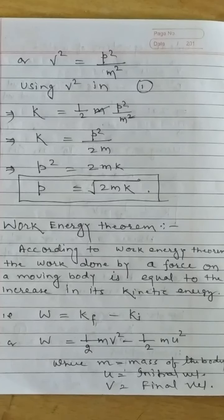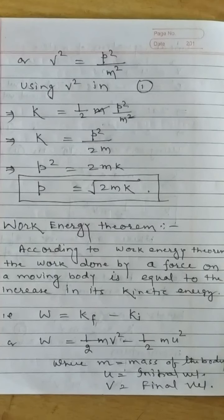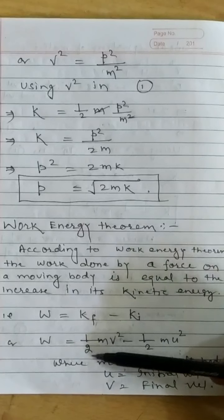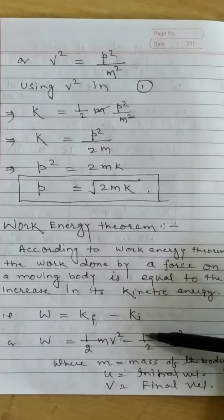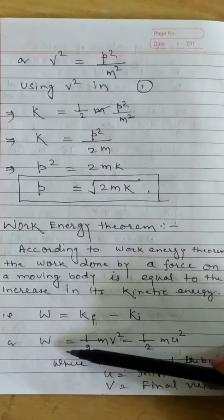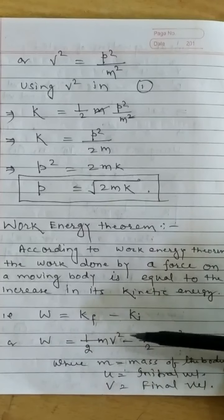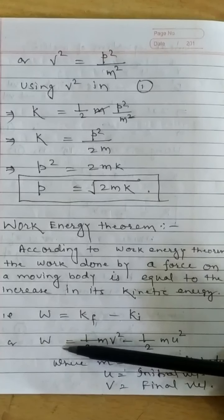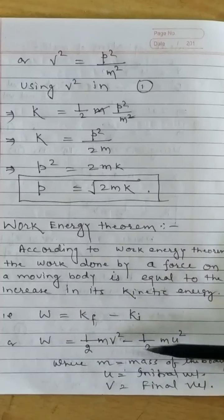Work-energy theorem: According to the work-energy theorem, the work done by a force on a moving body is equal to the increase in its kinetic energy. That is, W = KE_final − KE_initial = ½MV² − ½MU², where V is the final velocity and U is the initial velocity. This means work done by a force on a moving body equals the increase in kinetic energy.